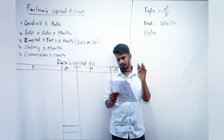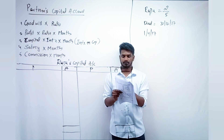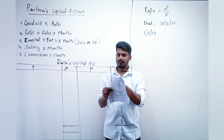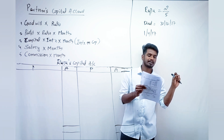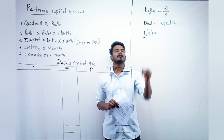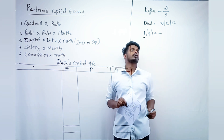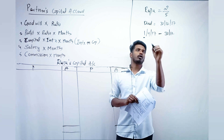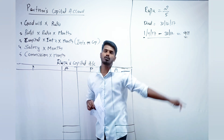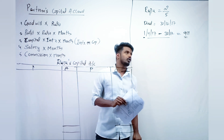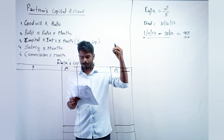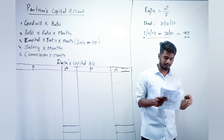The balance sheet of the firm is as on 31st March 2017, which means the year starts on 1st April. From 1st April to 31st December, there are nine months. So Raja was working for nine months before he died.